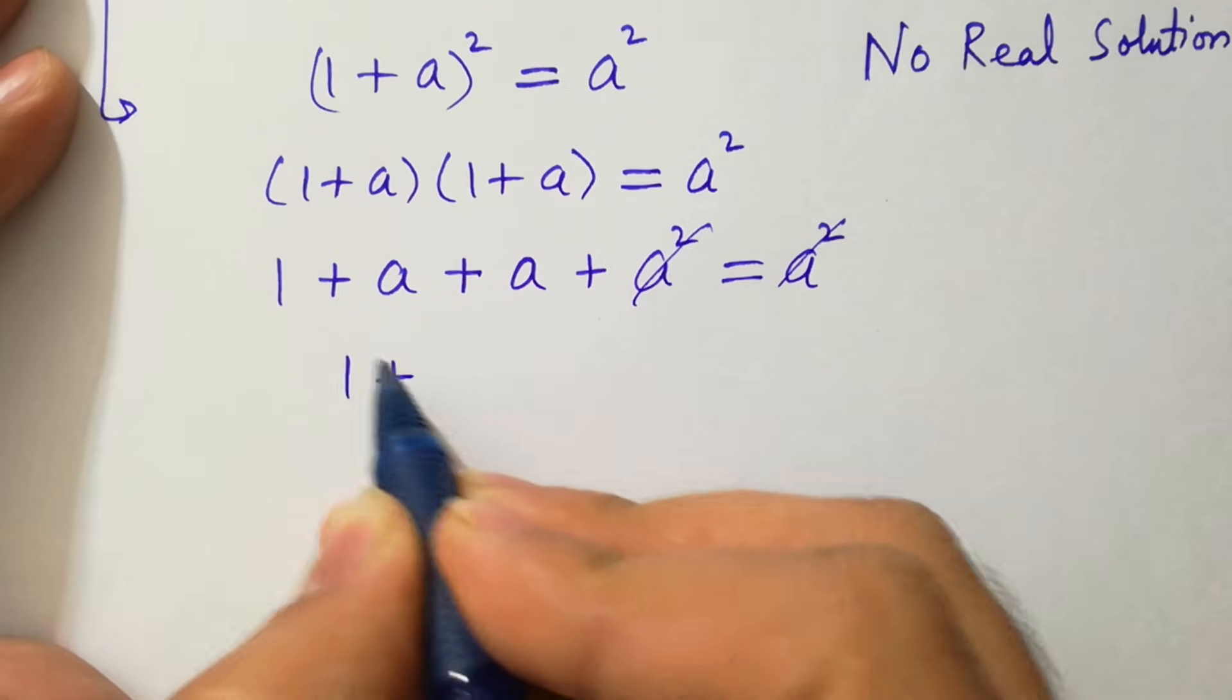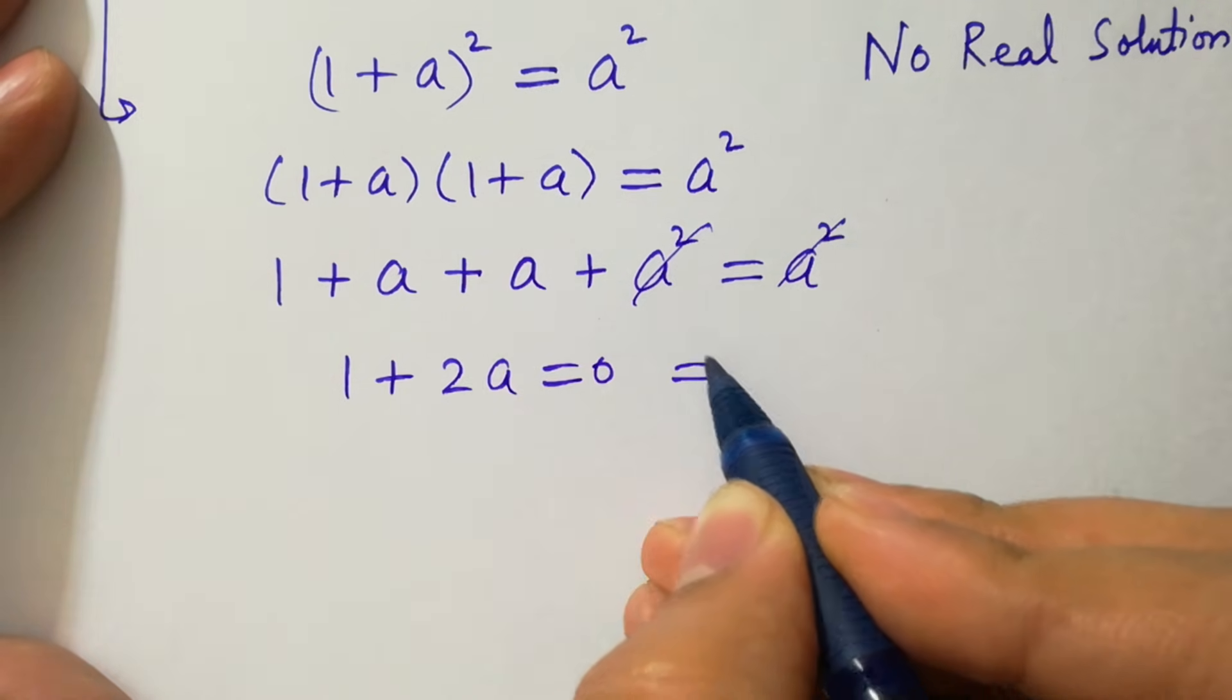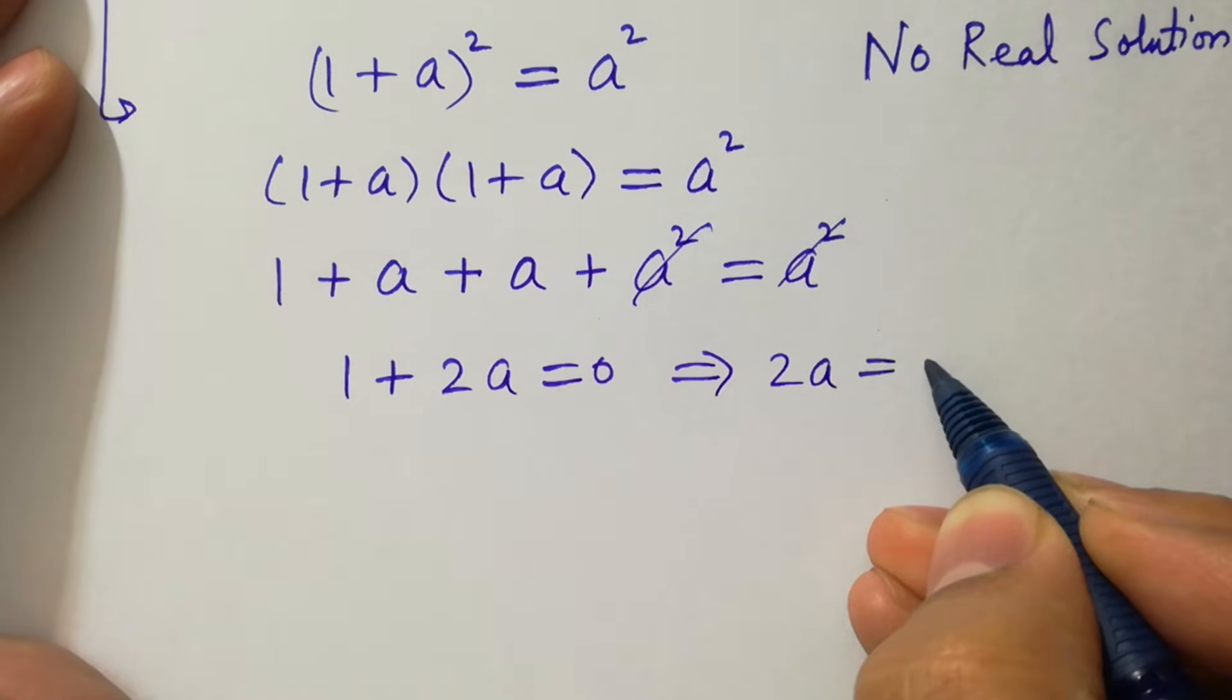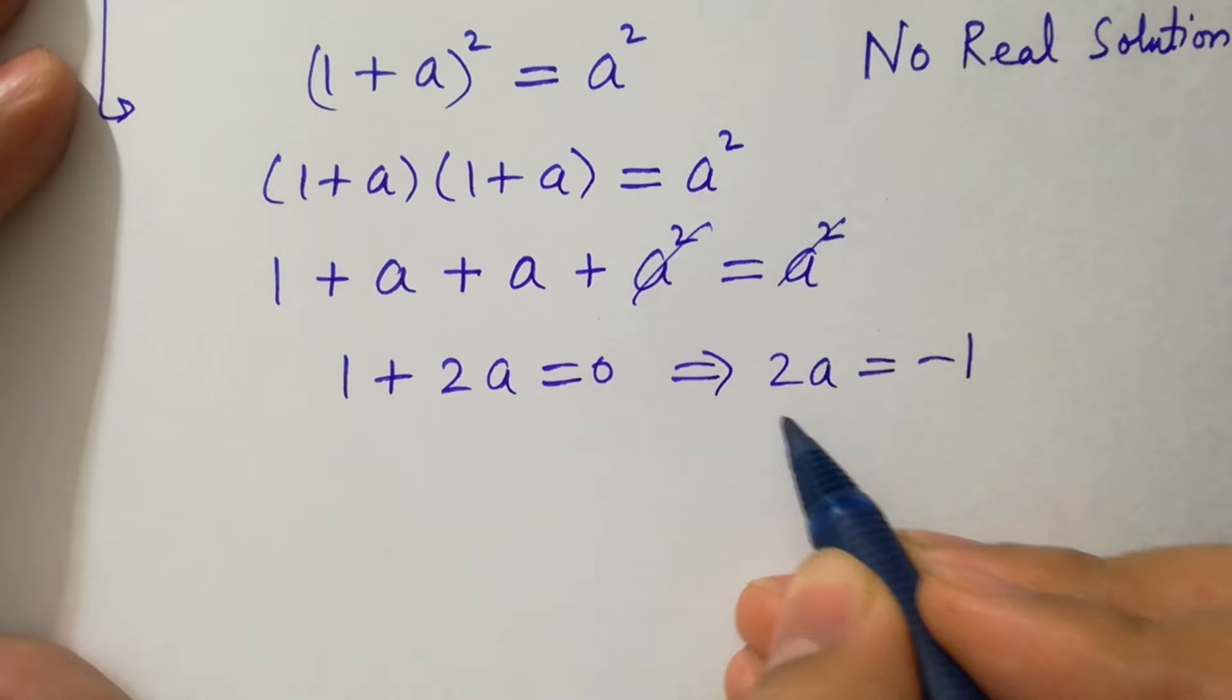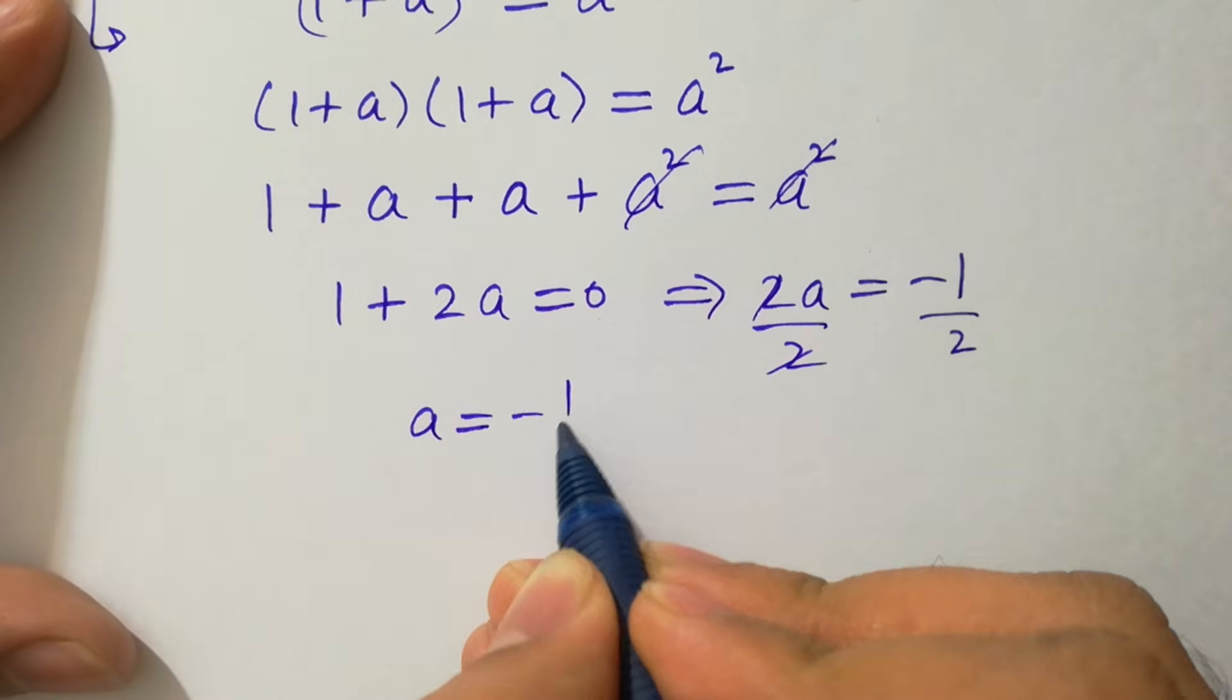We have 1 + a + a is 2a equal to 0. 2a equals -1, divided by 2 on both sides, 2 cancels. We get the value of a, which is -1/2.